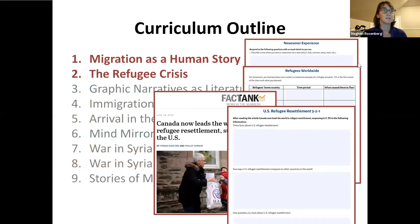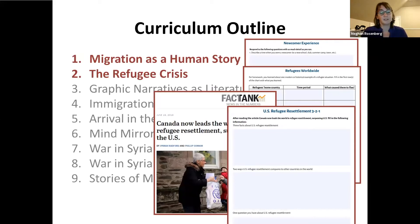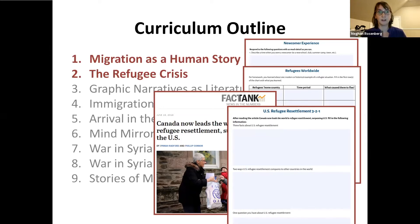To begin, we have 'Migration as a Human Story' and 'The Refugee Crisis.' These are designed as a cold entry point into immigration. If you're teaching this totally isolated, these are great beginning entry points. If you're teaching this as part of a bigger immigration unit, you may choose to modify or skip these lessons. We begin by personalizing migration, having students think about a time they've been a newcomer, introducing vocabulary, and contextualizing migration and refugees across world history.